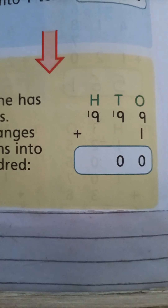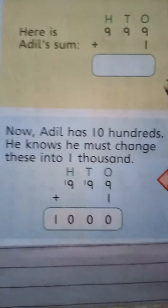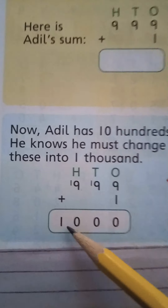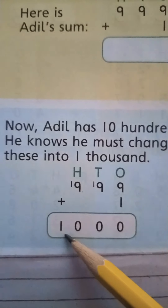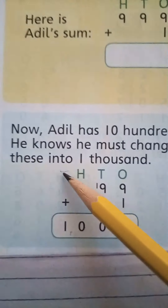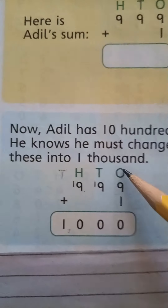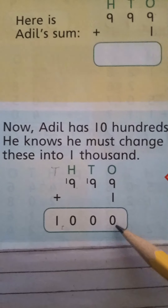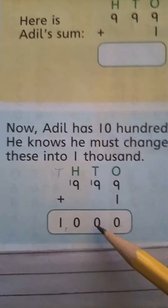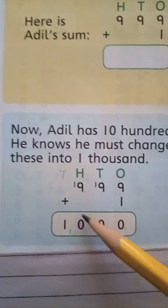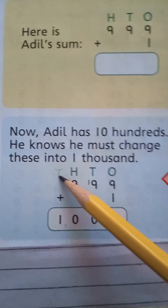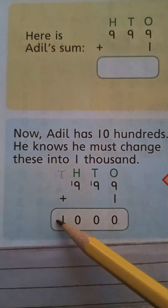How can we write the 10 hundreds? Adil will change his 10 hundreds into 1000. Here is the new number that is 1000 — that can be written under the thousands column. So, we have solved our ones column with a carry to the tens column. After solving the tens, one carry to the hundreds. Here we get 10 hundreds, and one is taken into the thousands column. So here we have the thousand.